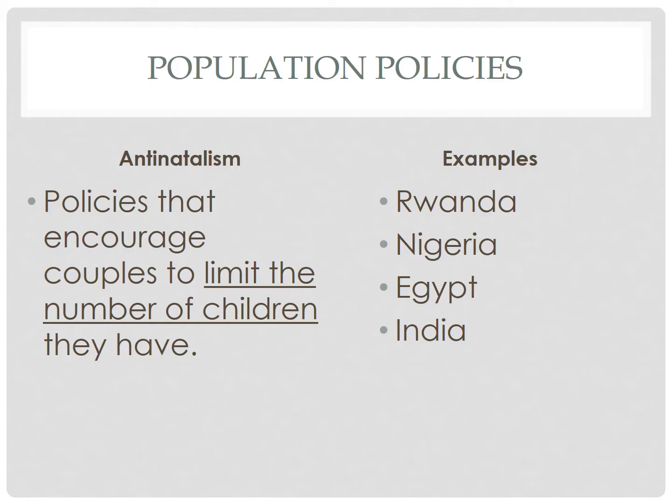Nigeria began an antinatalist program in 1998 to encourage women to use contraception and provided free family planning education. Egypt began the '2 is enough' campaign in 2018 when the total fertility rate was over 3 babies per woman. The country used a media campaign to encourage families to stop at 2 children, and also provided greater maternal and child health care, along with cash support to persuade families to have fewer kids.